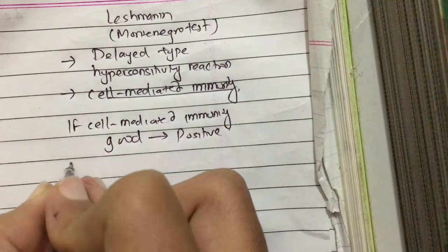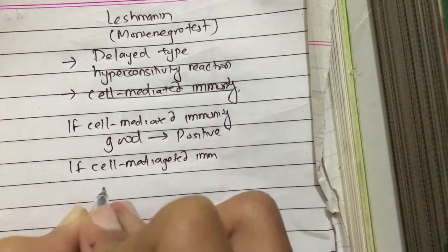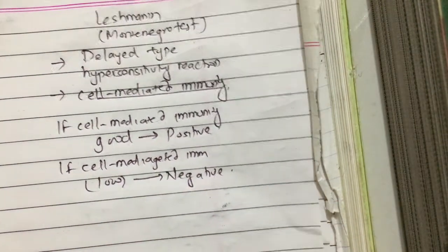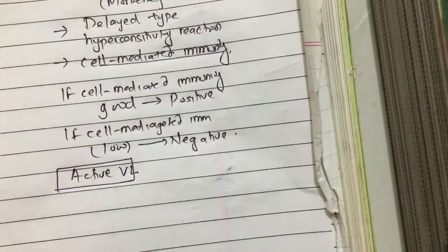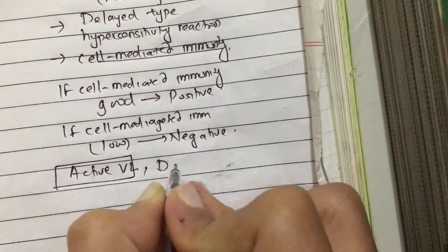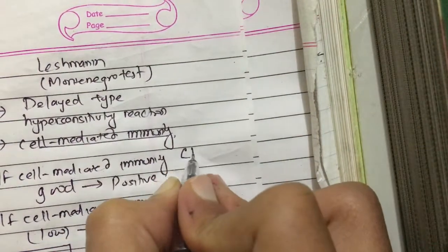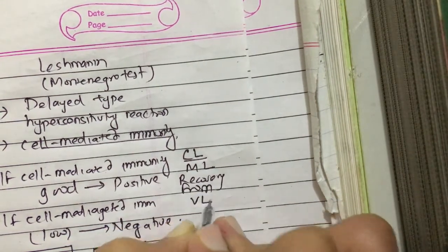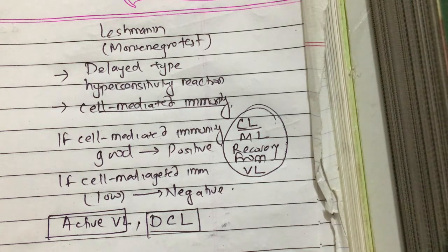If cell-mediated immunity is poor or low, then it is negative. The test is negative in cases of active visceral leishmaniasis and diffuse cutaneous leishmaniasis. In all other cases — such as cutaneous leishmaniasis, mucosal leishmaniasis, and recovery from visceral leishmaniasis — cell-mediated immunity is good, so the Montenegro test is positive.